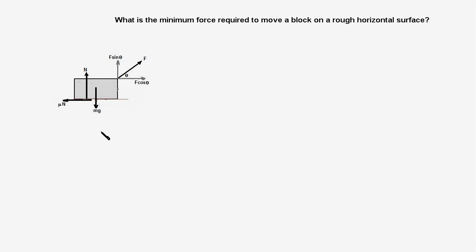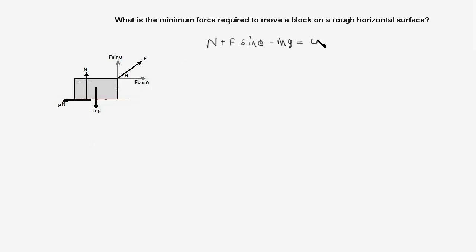Here is the FBD of the block with the applied force F at an angle theta with the horizontal. We will first do a qualitative analysis of the problem and handle the math a little later. Our objective is to find the optimum angle theta at which F is minimum. Writing the equilibrium equation in the vertical direction: N plus F sin theta minus mg equals 0, giving us N equal to mg minus F sin theta. Note that N is not a fixed quantity — it has a dependency on the angle theta as well. That is equation number one.